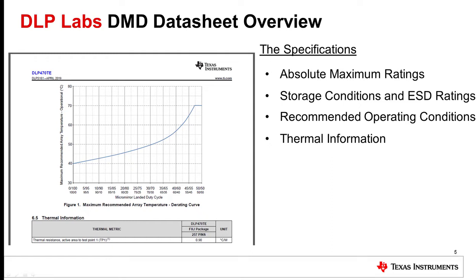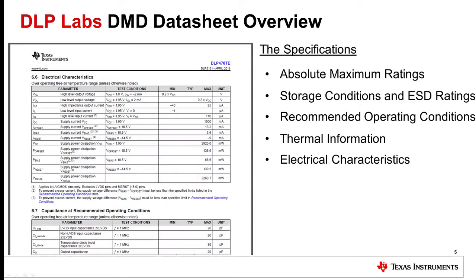Figure 1 shows that the maximum recommended array temperature depends on the long-term average of the landed micromirror duty cycle. The explanation of landed micromirror duty cycle is covered in section 7. The electrical characteristics and capacitance tables show the levels required for reliable operation of this device.